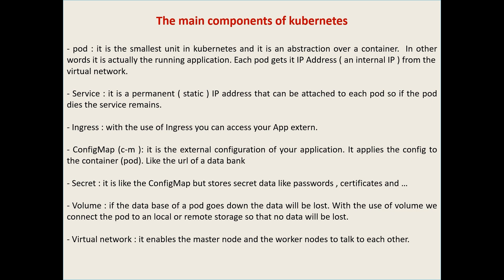Ingress allows us to access our application externally — we can say Ingress is for routing traffic into the cluster. ConfigMap lets us configure external configuration for our application. For example, if you have a database and want to connect it to your application, you configure it in the ConfigMap so the Pod can use it. Secret is exactly like ConfigMap but is used for credentials — for example, passwords or certificates.